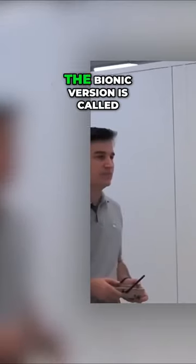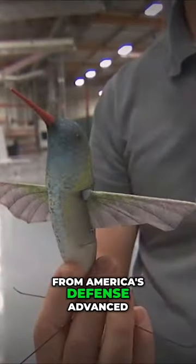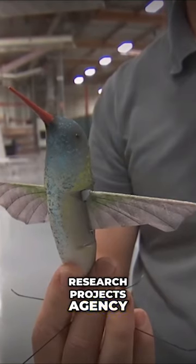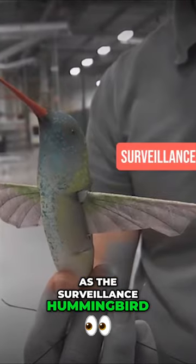They're so tiny that the bionic version is called a nano-air vehicle. Developed by Aerovironment, with funding from America's Defense Advanced Research Projects Agency, it was unveiled in 2011 as the Surveillance Hummingbird.